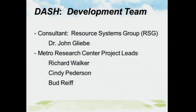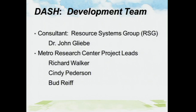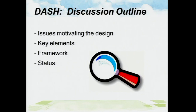So what are we going to talk about? First, what are some of the key issues motivating the design for a tool such as this? Why do we need to add the complexity to such a tool? We'll then go over some of the key elements within this model — the framework and structure of it — and then where we are. There's a host of policy issues facing us, and I want to go through a few of them and indicate how this tool can better address them.